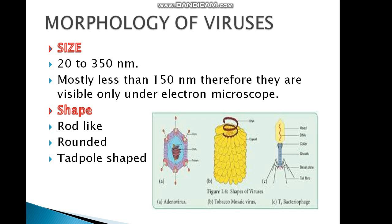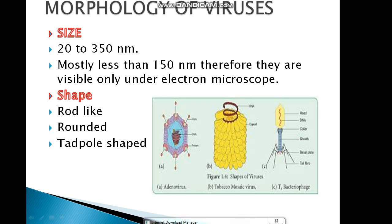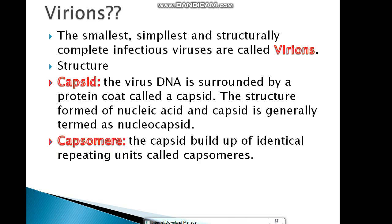Viruses smaller than 150 nm cannot be seen under the light microscope. There are different types of shapes. The first is a rounded shape. The second is a rod-shaped virus — a common example is Tobacco Mosaic Virus. We also have bacteriophages, which infect bacteria.